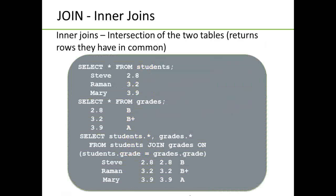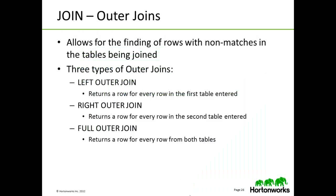The HQL command join is for inner joins. Inner joins are the intersection of the two tables — it returns rows they have in common. The Hive query language also has the notion of an outer join. Outer joins allow for finding rows with non-matches in the tables being joined. Three types of outer joins are supported: left outer join, right outer join, and full outer join.